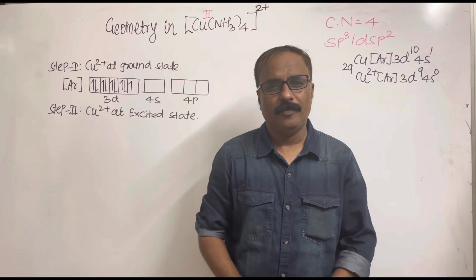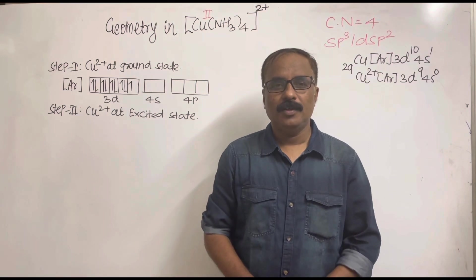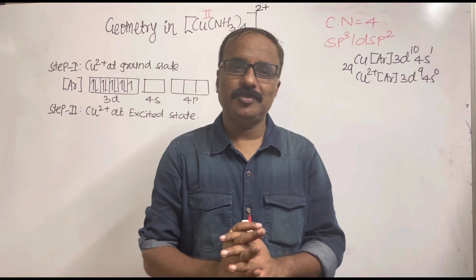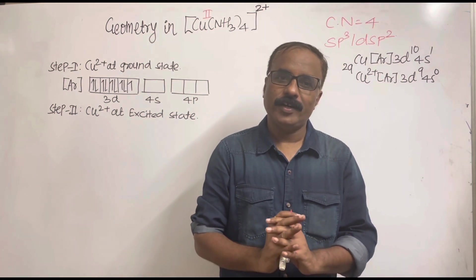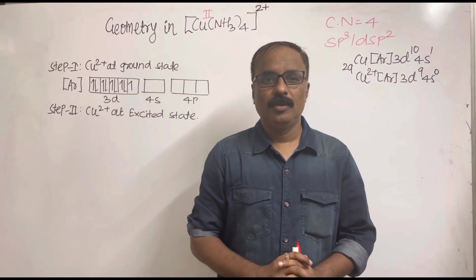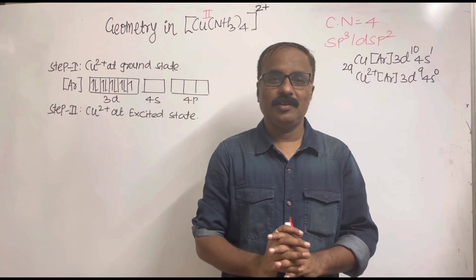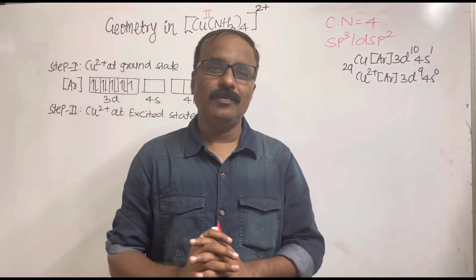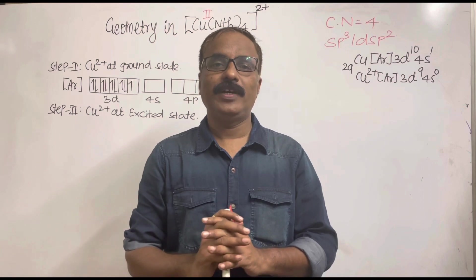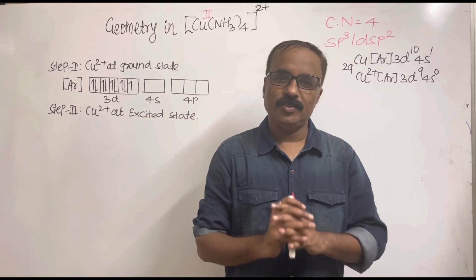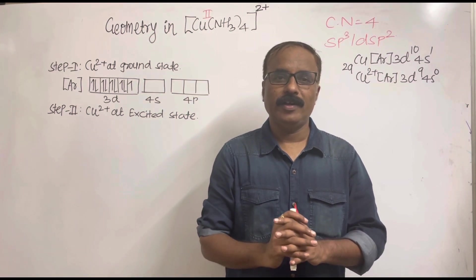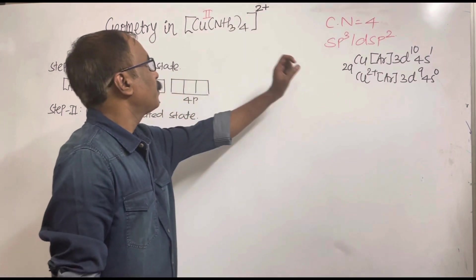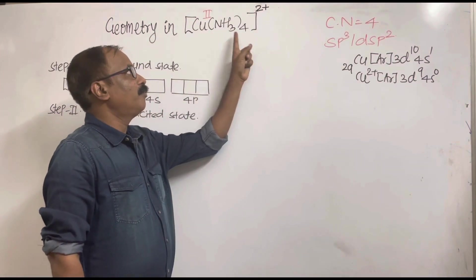Hello friends, in this video lecture on Valence Bond Theory, we will see an exceptional case: tetraamine copper(II). What is the correct hybridization and the correct geometry of this complex? In this complex, copper has a coordination number of four.